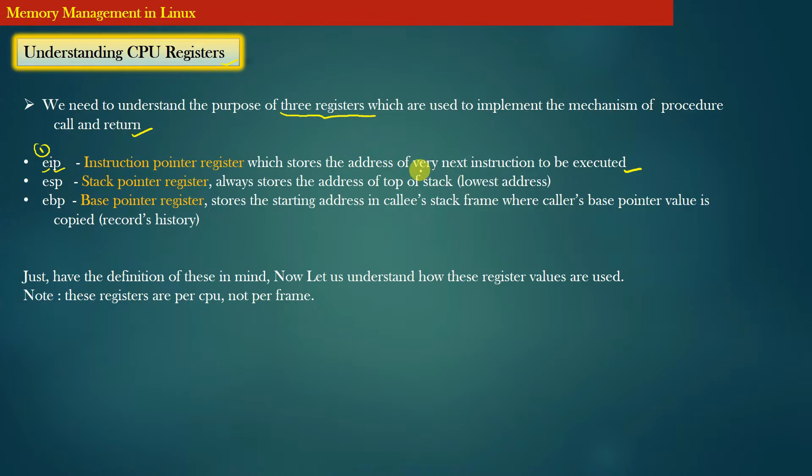The same goal—knowing the very next instruction to be executed—can be achieved by either of these policies. The second register is a stack pointer register. Stack pointer register always stores the address of top of the stack, that is the lowest address of the stack memory. And the third register is a base pointer register.